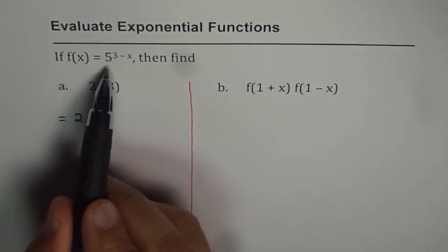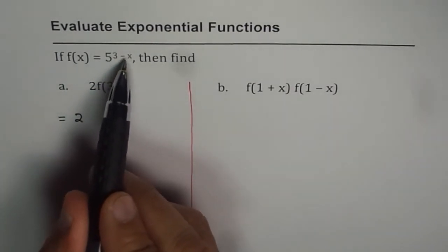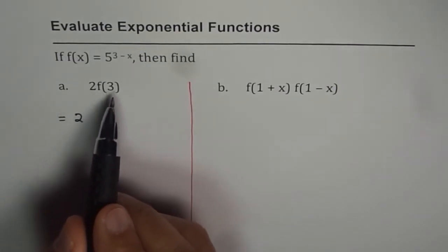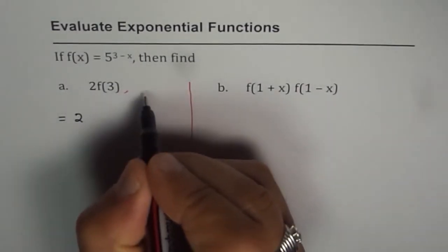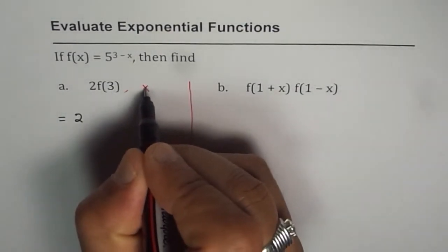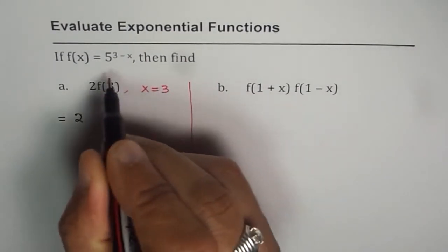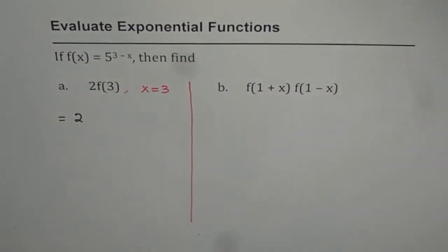So our function is 5 to the power of 3 minus x. When we say f(3), you have to substitute x as 3, right? So this really means you have to substitute x equals 3 for the function. This is what it means. So let us do that.